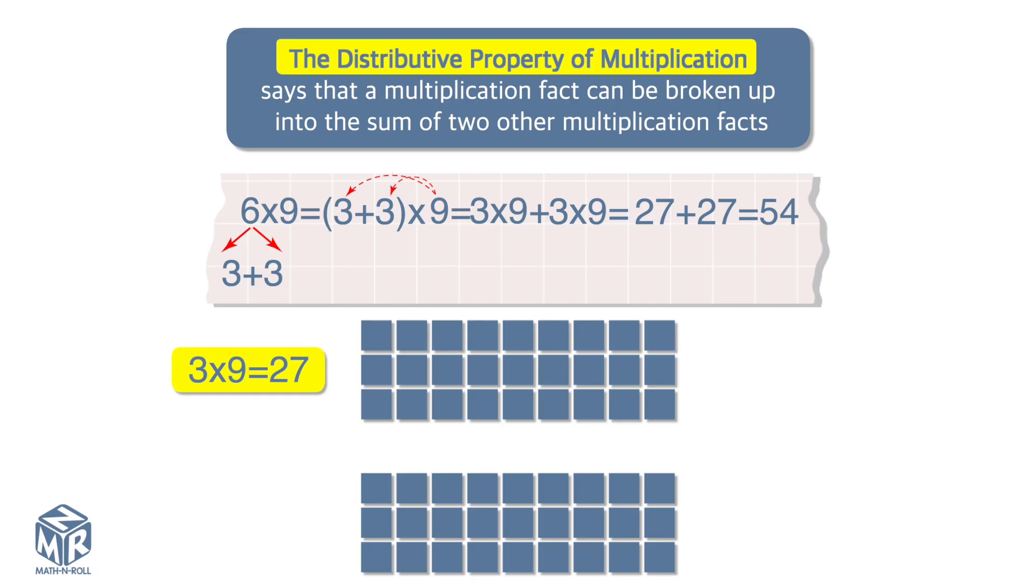3 times 9 equals 27. 27 plus 27 equals 54.